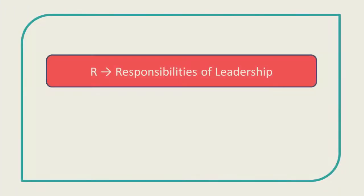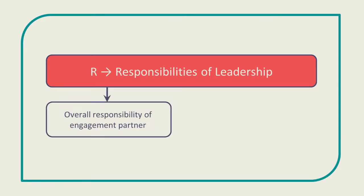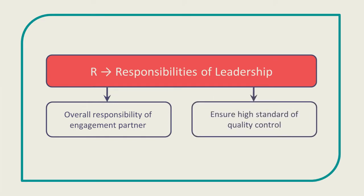The R is for responsibilities of leadership. The engagement partner must take overall responsibility for the audit team and the audit process. This means that they must also ensure the quality control procedures within the firm are of a high standard so as to follow professional standards accordingly.